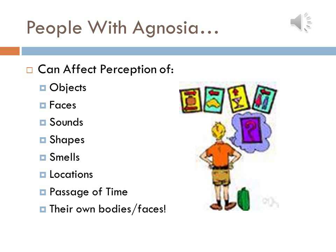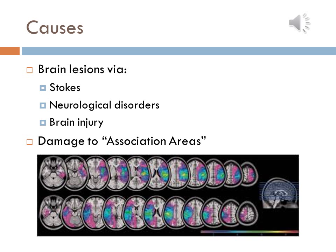People with various forms of Ignatia may experience challenges in recognizing objects, faces, sounds, shapes, smells, locations, the passing of time, or even parts of their own bodies. Symptoms of Ignatia most commonly arise following stroke, neurological illness, or brain injury which damages particular cortical areas known as association areas.